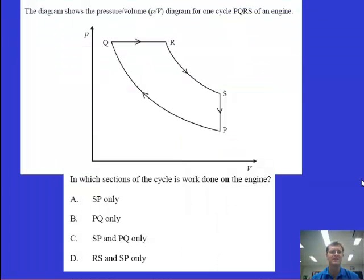Think about some questions related to this. This diagram shows the pressure volume diagram for one cycle PQRS of an engine. In which section of the cycle is work done on the engine? Hopefully you've worked out the work is done in this situation in the P to Q only, because that's the only section where we're having to compress the volume and there's an area underneath the graph. So what we have here is this section underneath that line, that's where work is being done on the engine. Everywhere else in the cycle, the engine or the gases involved in the engine are doing the work.